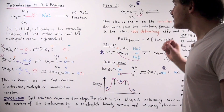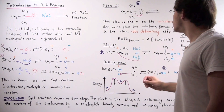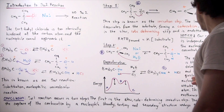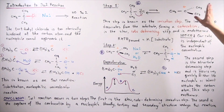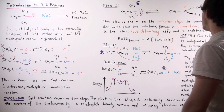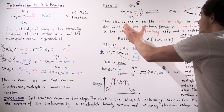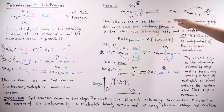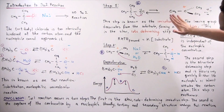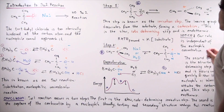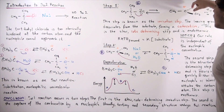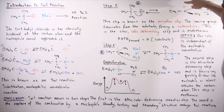In step one, we have tert-butyl chloride, and this bond dissociates — the lone pair of electrons goes onto the chloride atom — forming two intermediates. This is known as the ionization step, because we have ionization of the chloride. The leaving group simply dissociates from the substrate, forming a carbocation intermediate. This carbocation intermediate has a positive charge, and it is stabilized by our solvent — usually water — which is a protic polar molecule.